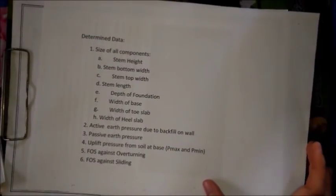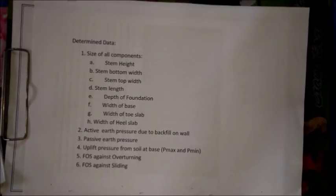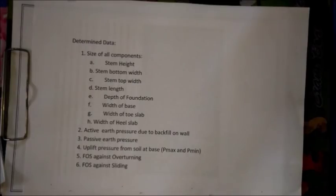Now let's see what data we have to determine. First, we need to find the sizes of all components: stem height, stem bottom width, stem top width, stem length, depth of foundation, width of the base, and widths of the heel slab and toe slab. We also need to determine active and passive earth pressure values, the uplift pressure at the base, and the factor of safety against overturning and sliding.